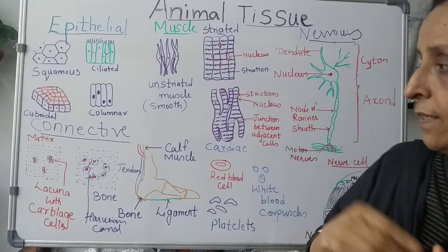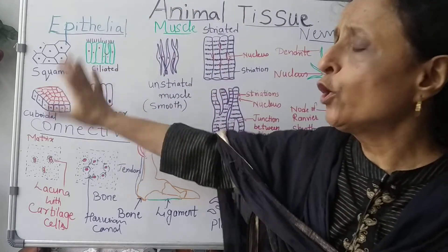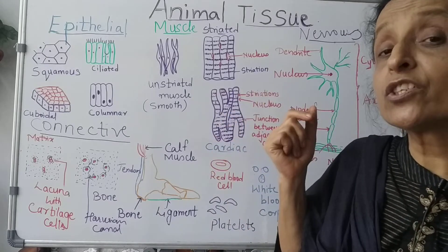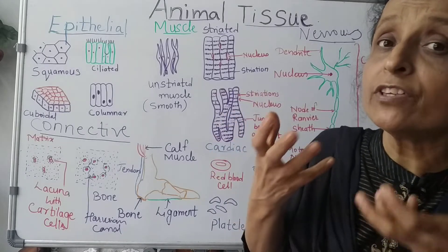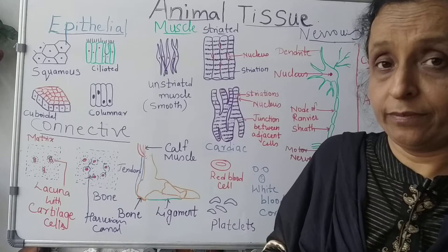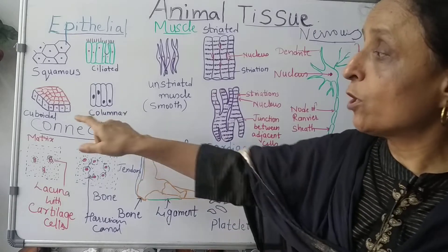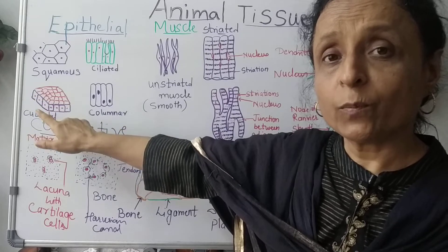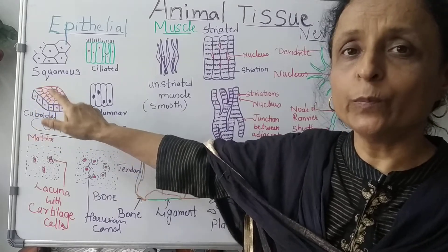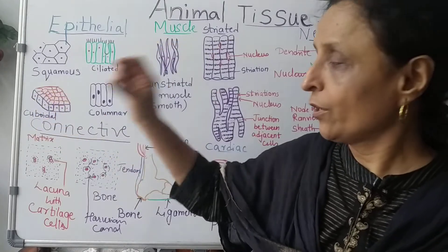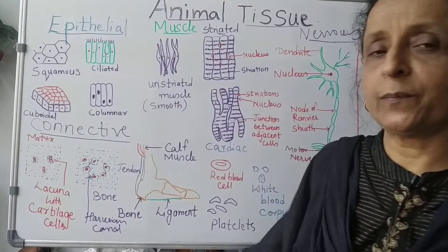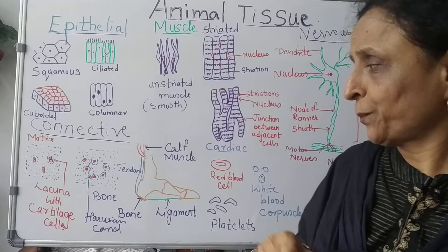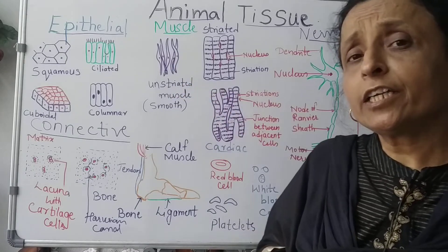Cuboidal cells are cubical in structure and are present in the kidney, where they help in absorption. So absorption takes place with the help of cuboidal cells. This concludes our discussion of epithelial tissue. Next is connective tissue — by the name itself you can understand it connects things.